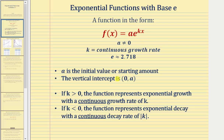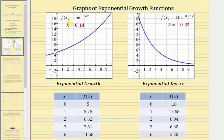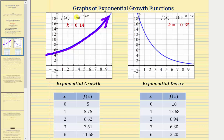Now let's look at this graphically. Here we have the graph of f of x equals 5 times e raised to the power of 0.14x. Notice how k is positive — k equals 0.14. This tells us our function is going to be increasing, and we have exponential growth, as we see here. This also tells us the continuous growth rate is 14%. Also notice that a is equal to 5, and the vertical intercept is 5.